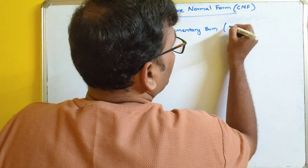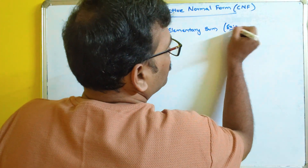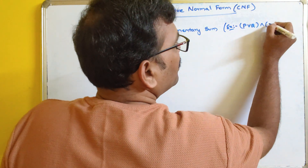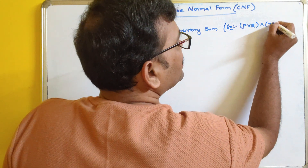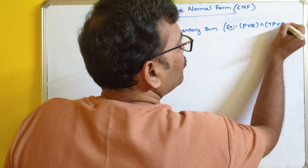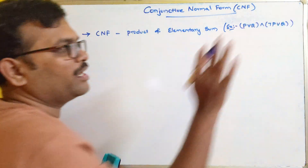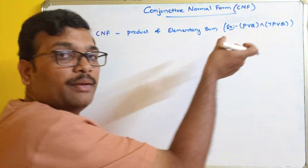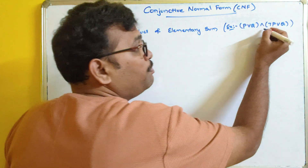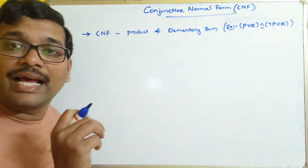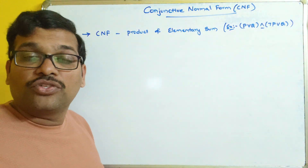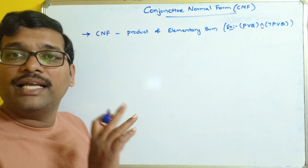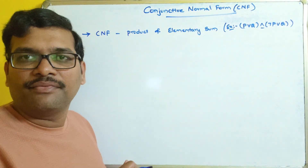For example, consider P or Q, and negation P or Q — in this format. There should be elementary sums, and in between the elementary sums there should be the conjunction connective. Then we can say that particular formula is in CNF.